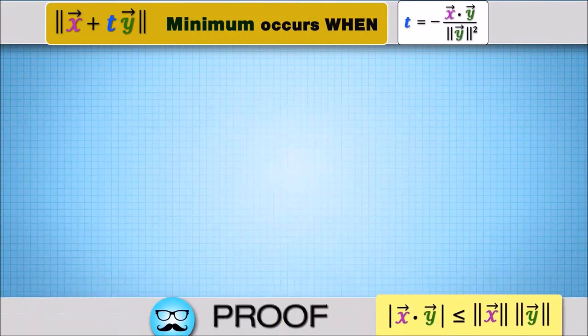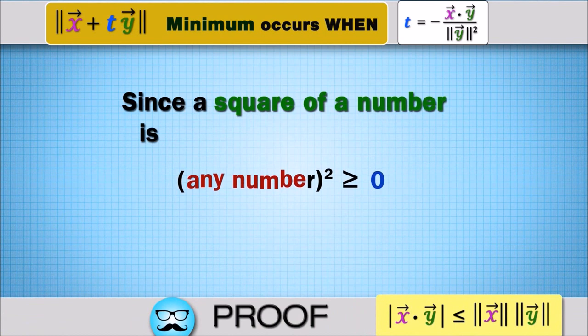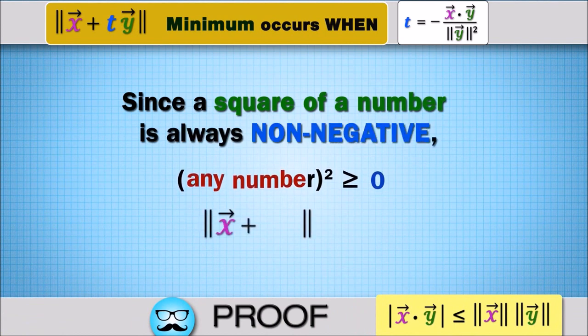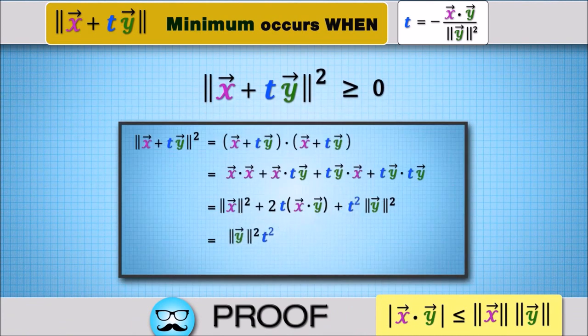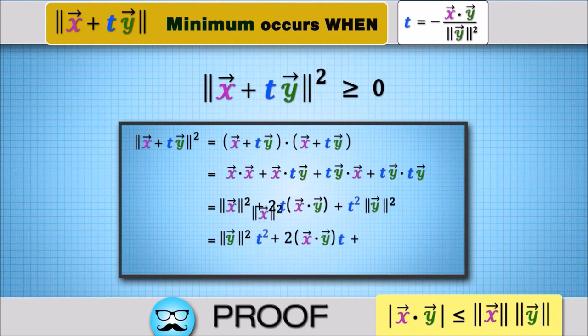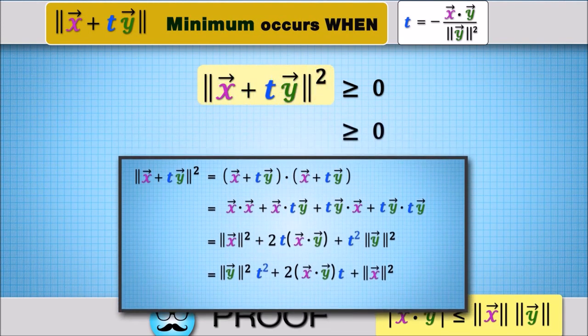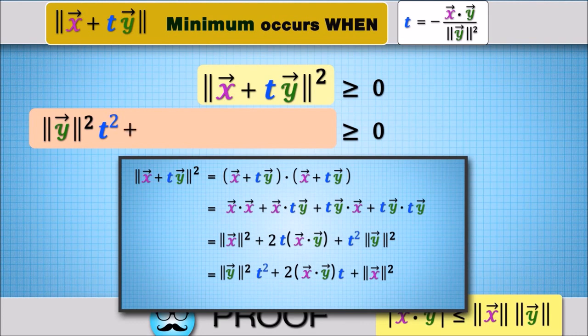Proof. Since a square of a number is always non-negative, the norm of x plus ty squared is greater than or equal to zero. From the proof of the lemma, we already know the left hand side is the same as the norm of y squared t squared plus 2x dot yt plus norm of x squared.